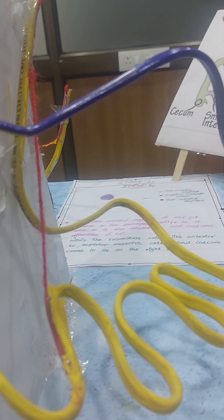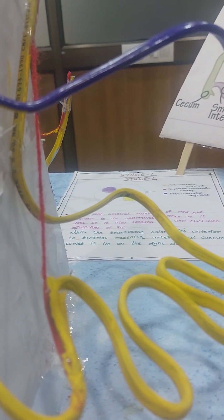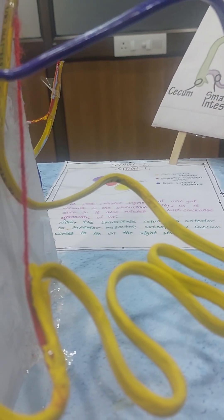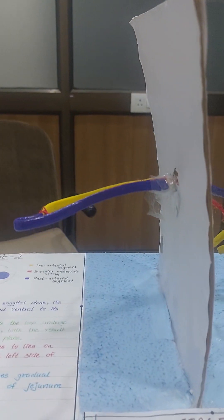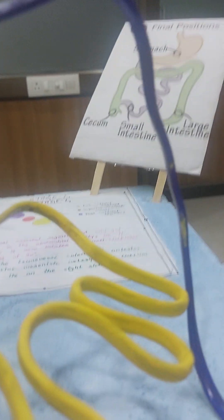Thus, the mid-gut loop again undergoes a further anti-clockwise rotation of 90 degrees. The first rotation was from anterior to this rotation, that was the first 90 degrees, and then a second 90 degrees.